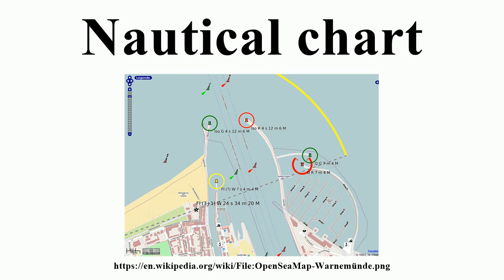Relative to a geodetic datum such as WGS 84, a bearing is the angle between the line joining the two points of interest and the line from one of the points to the north, such as a ship's course or a compass reading to a landmark. On nautical charts, the top of the chart is always true north rather than magnetic north, towards which a compass points. Most charts include a compass rose depicting the variation between magnetic and true north.